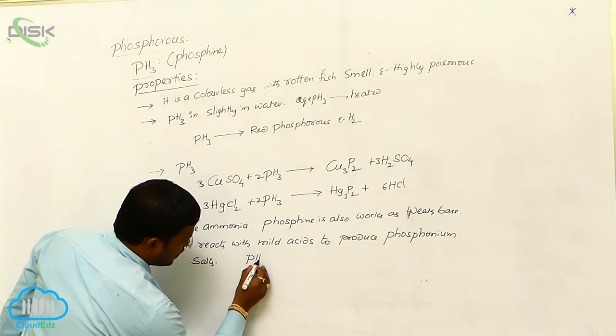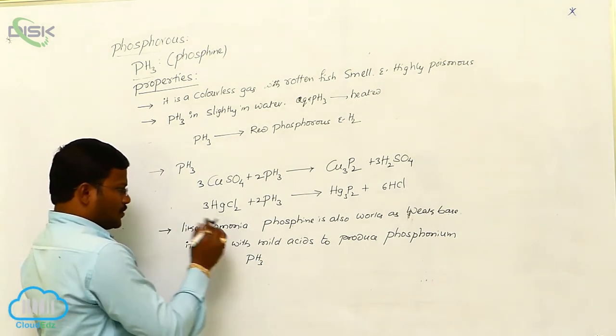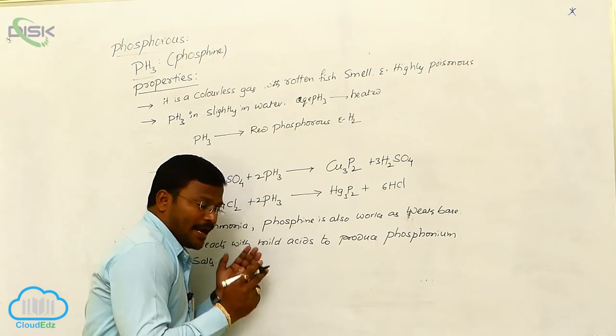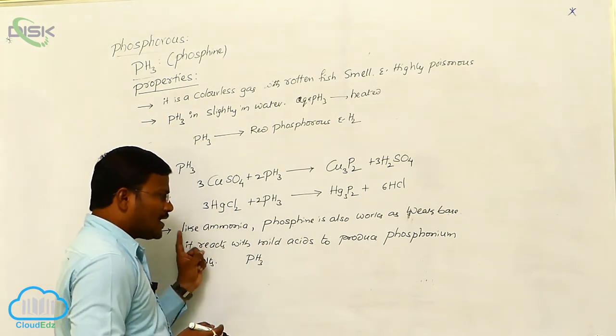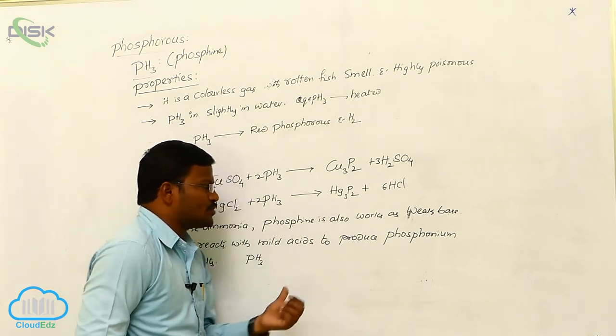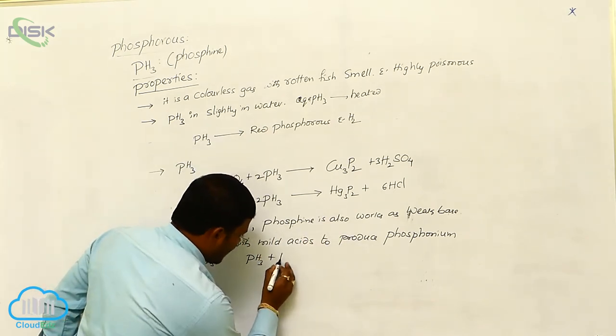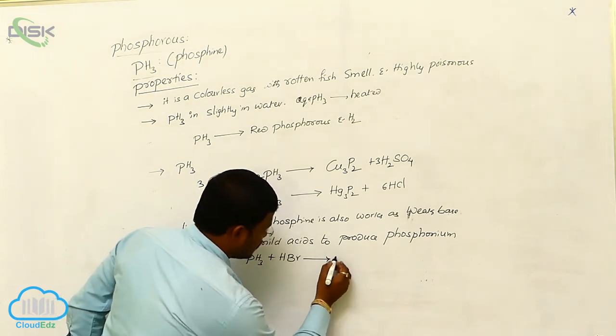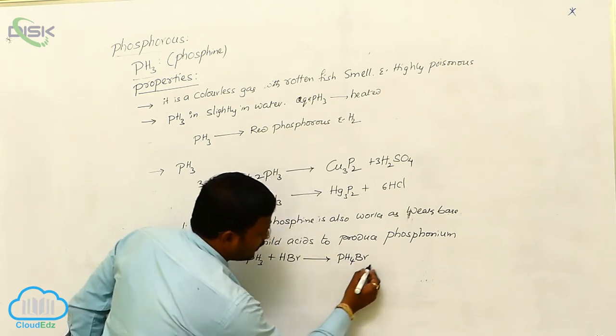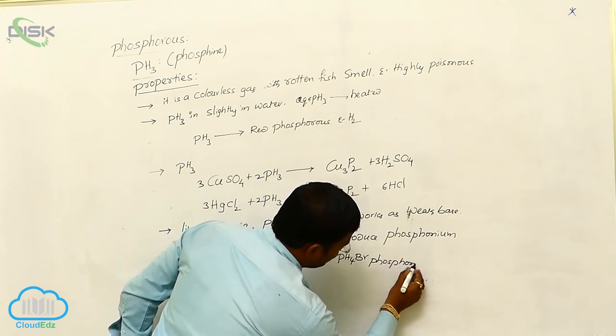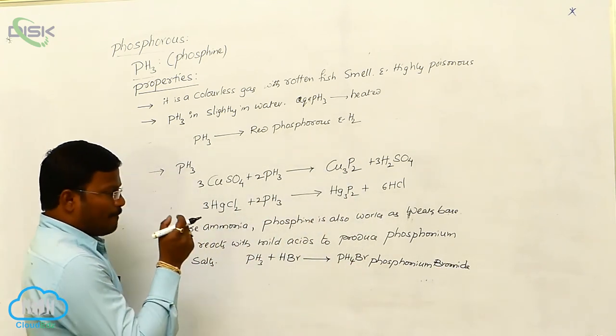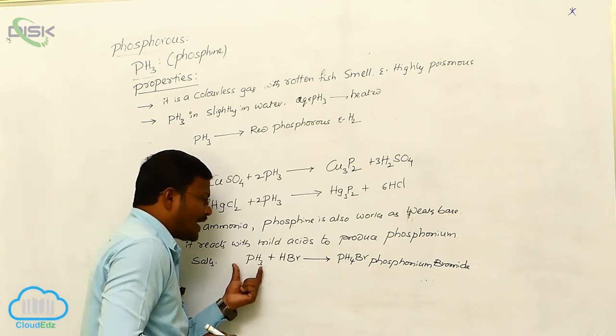So let us have the chemical reactivity or chemical reaction for this statement. Once again, ammonia is NH3, phosphine is PH3, and nitrogen phosphorus belongs to same family. This is the reason why like ammonia, phosphine also works as weak base and it reacts with mild acids to produce phosphonium salts. Here, phosphine reacts with hydrogen bromide to produce PH4Br, phosphonium bromide as our compound.